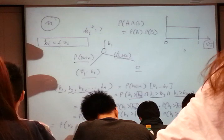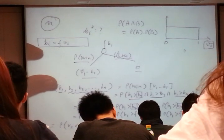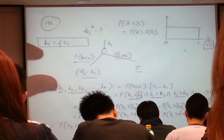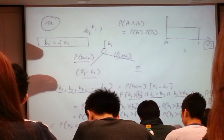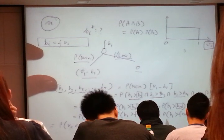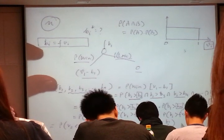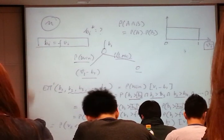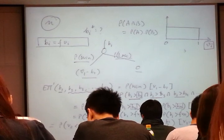So, making the subject of the formula, you get probability V2 less than B1 over F times probability V3 less than B1 over F times probability VN less than B1 over F. And we still have V1 minus B1.